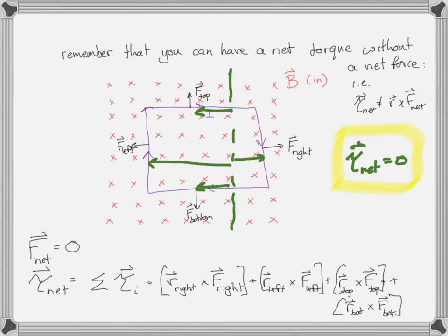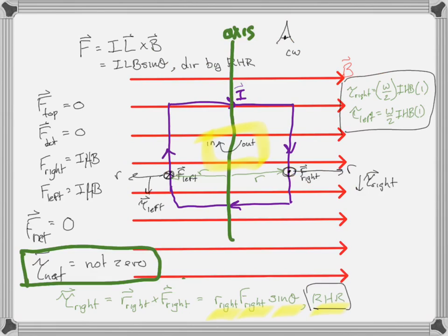When it goes past 90 degrees, the current on the right that was going down is now going up, and the current on the left that was going up is now going down. So the direction of torque is in the other direction — it's going to push it back to the 90-degree orientation. It's like a pendulum: it'll flip over 180 degrees, come to a stop, then flip back 180 degrees.